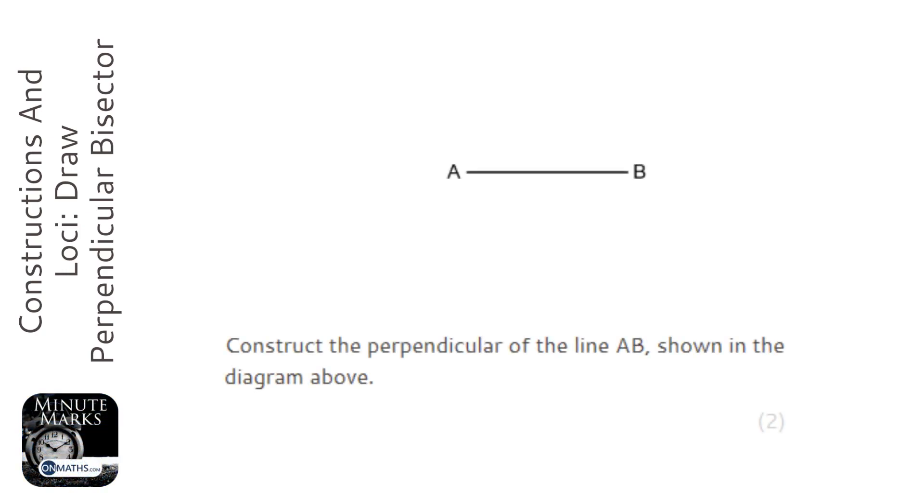In this question, we're asked to construct the perpendicular of the line AB. What this means is we want a perfectly straight line going down through line AB, being the same distance from point A, which is this point here, and point B there.